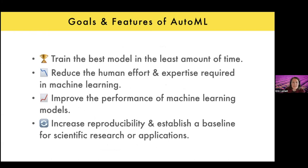One of the goals of AutoML is to train the best model in the least amount of time. We can talk about two types of time. First, developer time — how long it takes to write the code to find the best model. Without AutoML, you'd be writing a lot of code to try many different models yourself. Second, training time — minimizing that helps you iterate faster, tackle more problems in less time, and can be cheaper if you're paying for server time.